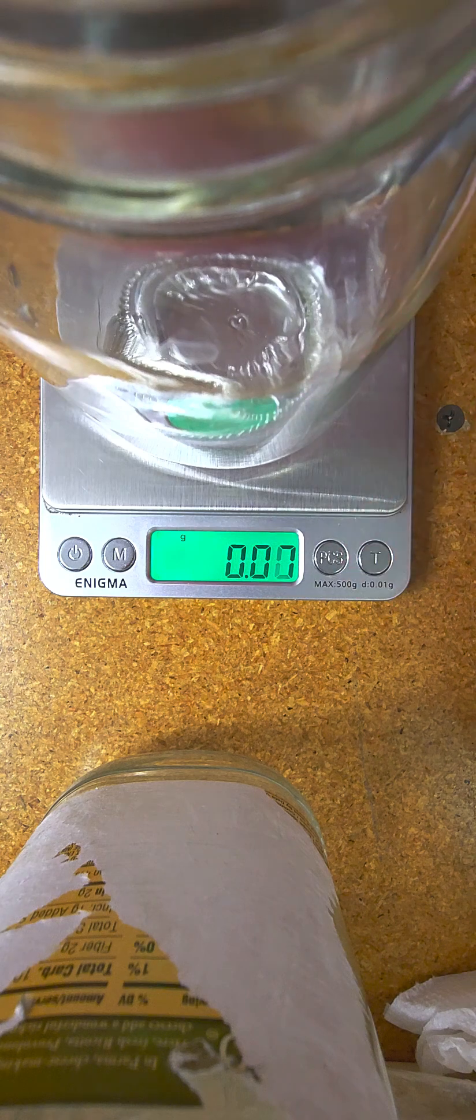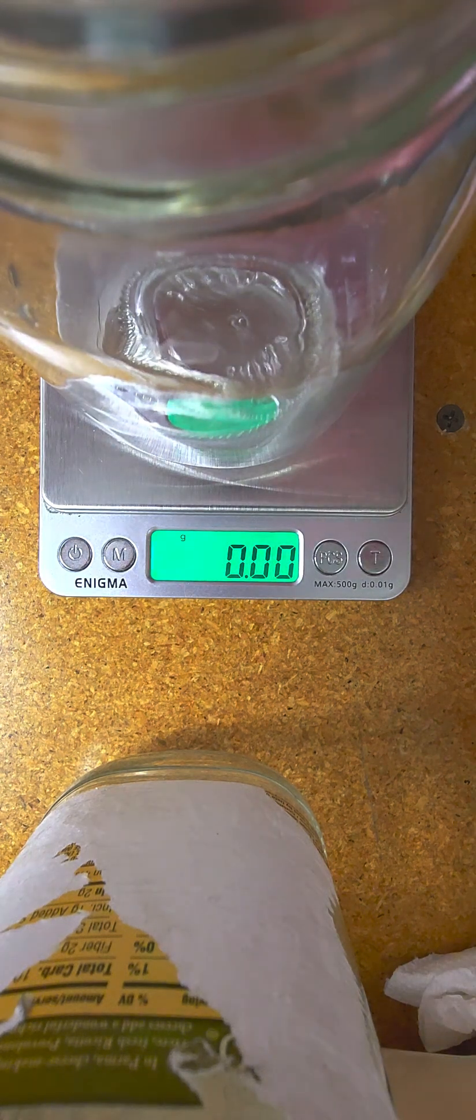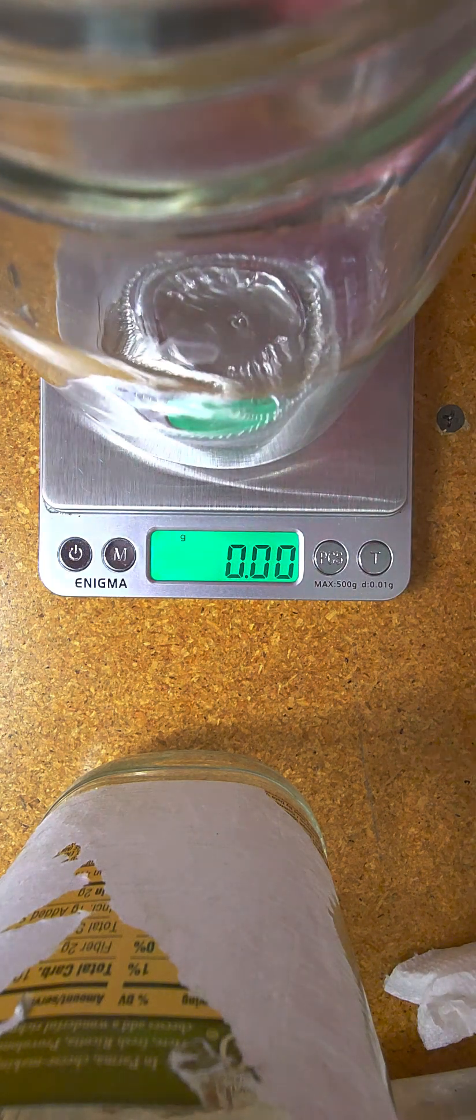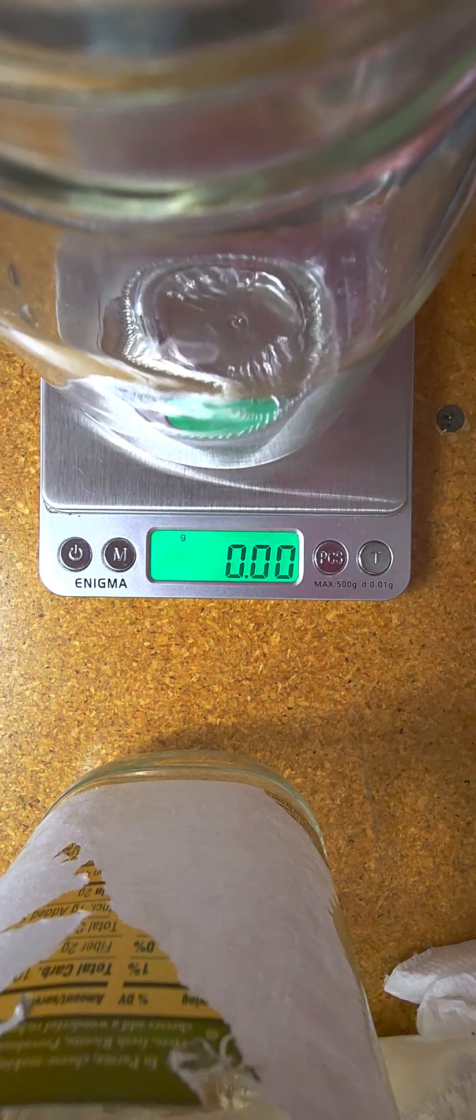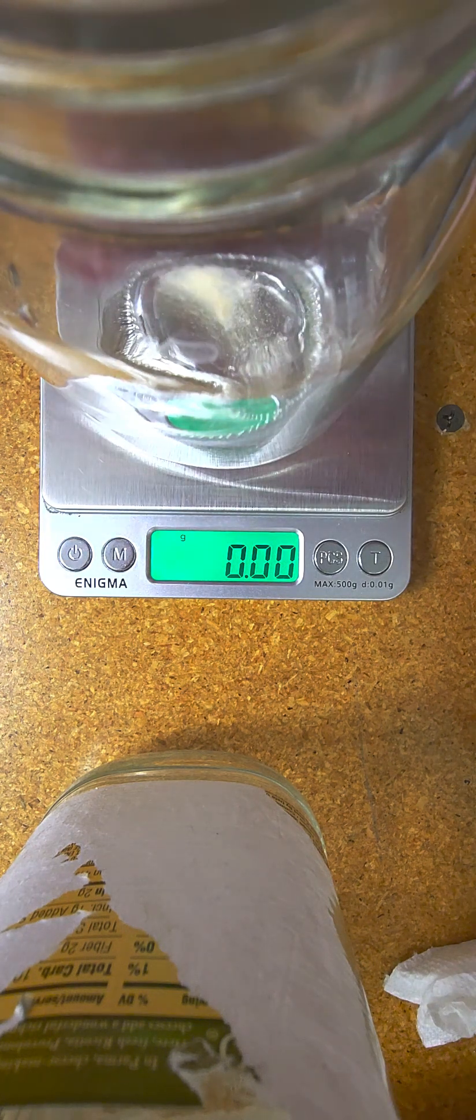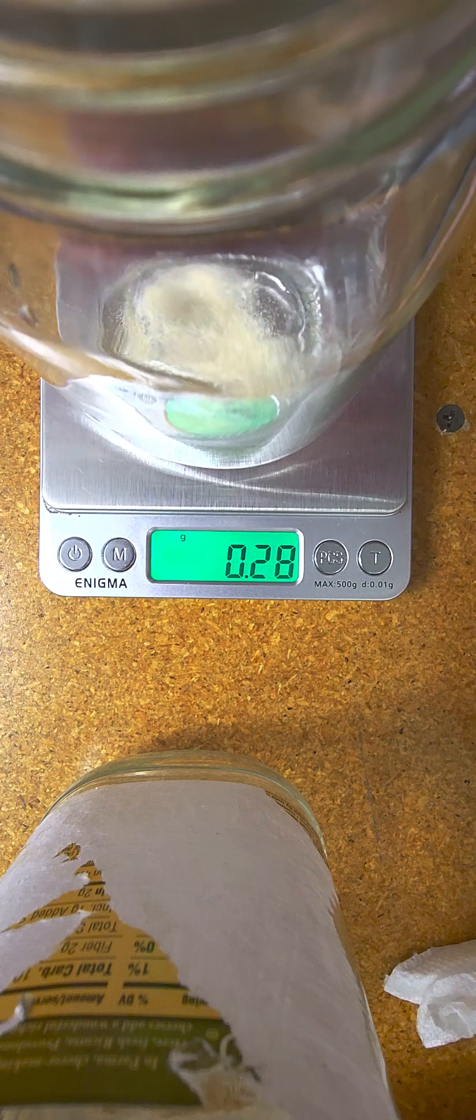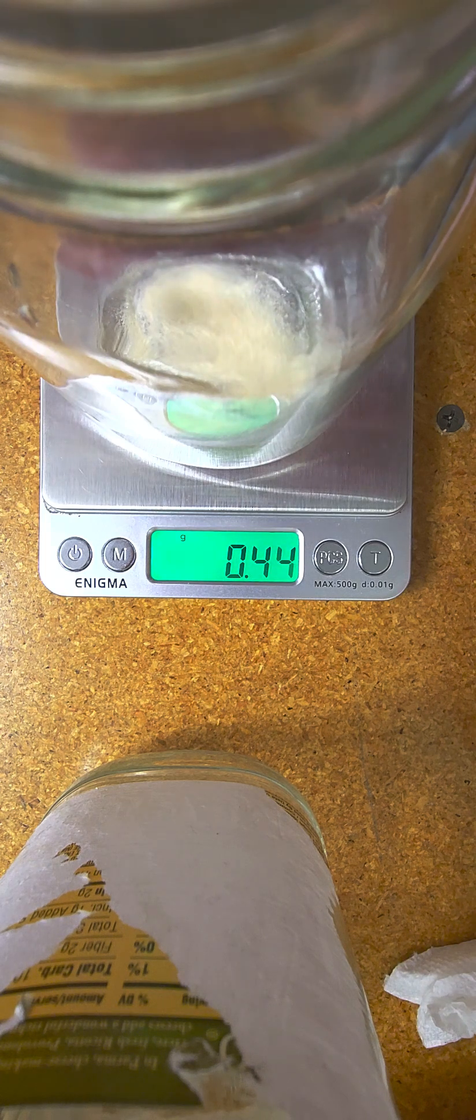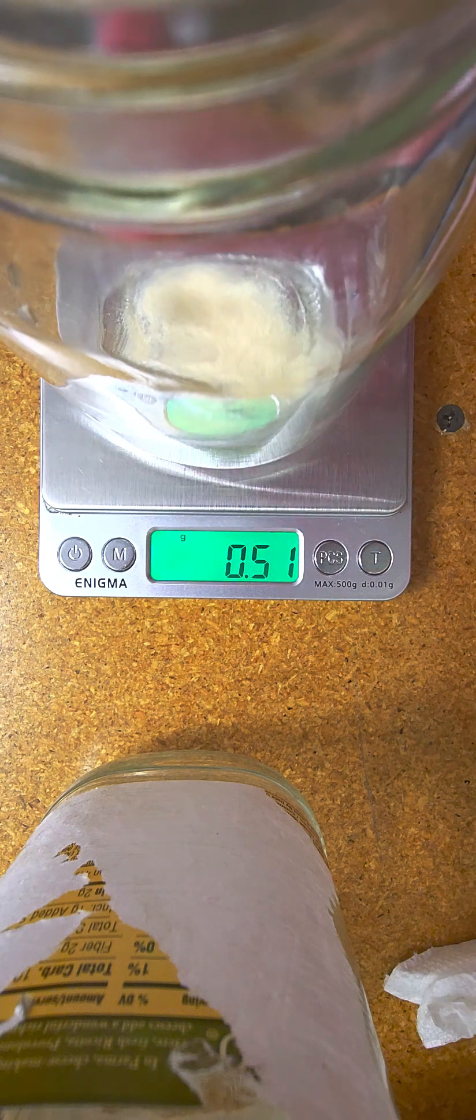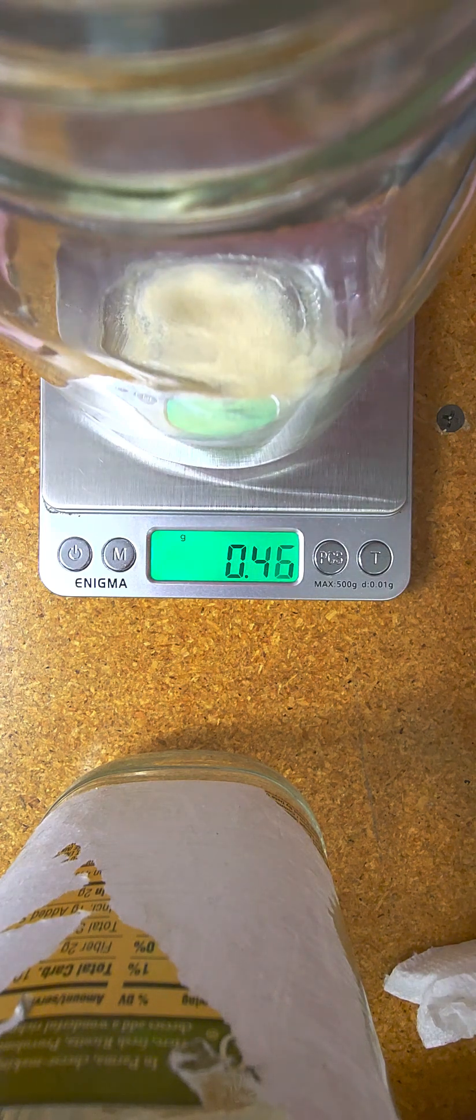We'll tare that and we are going to add a half gram of light malt extract. Just a half gram of light malt extract. There's our half gram. We are one hundredth over, that is alright.